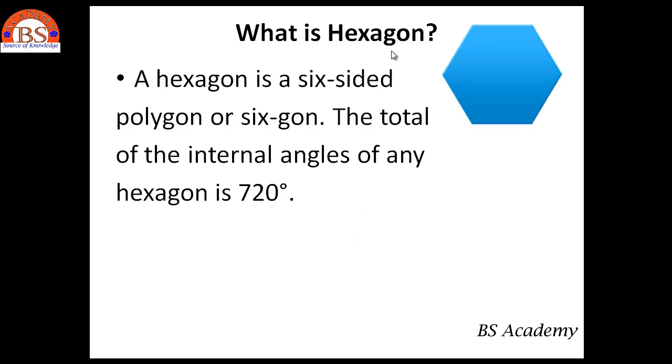And the next is hexagon. A hexagon is a six sided polygon or six gun. The total of the internal angles of any hexagon is 720 degrees.